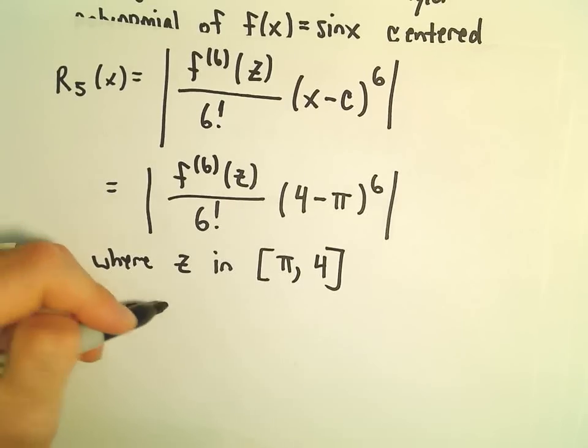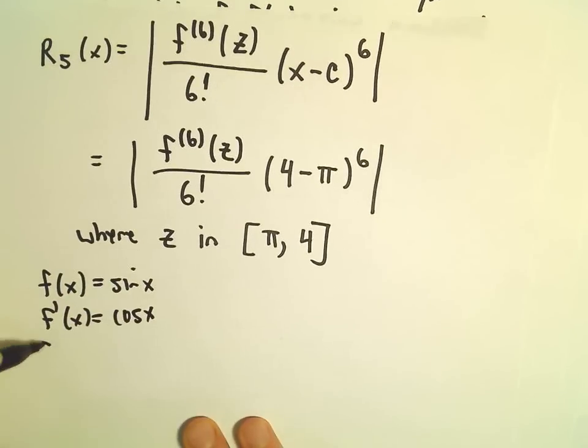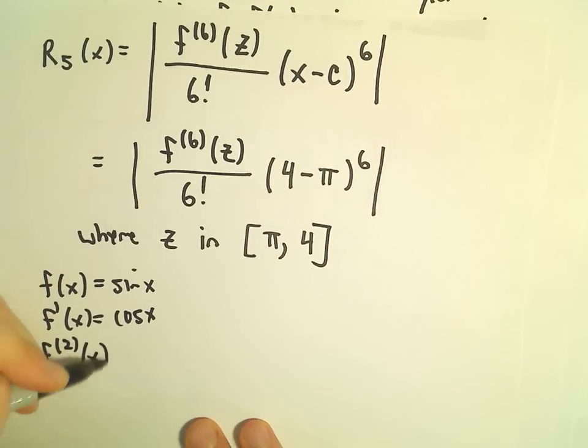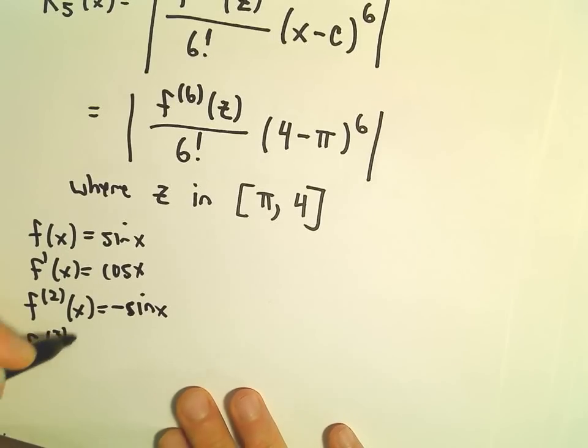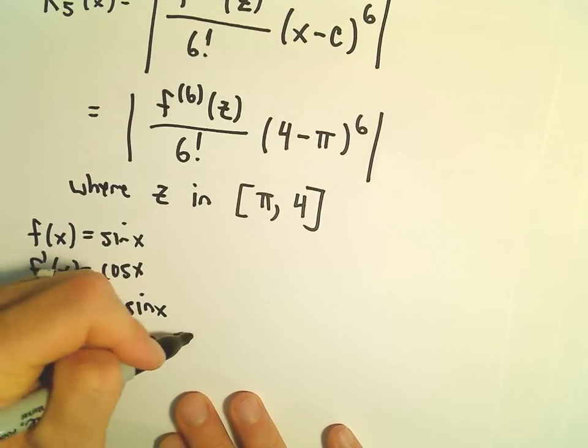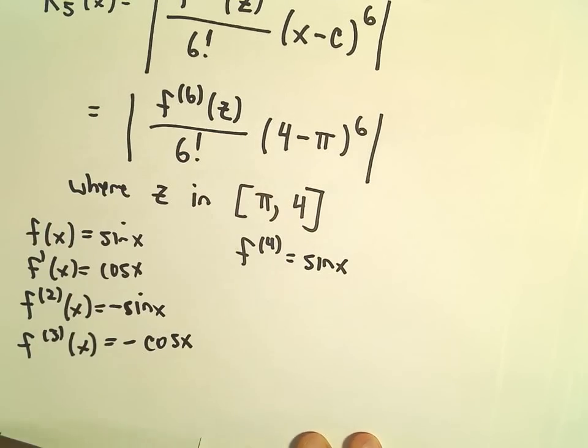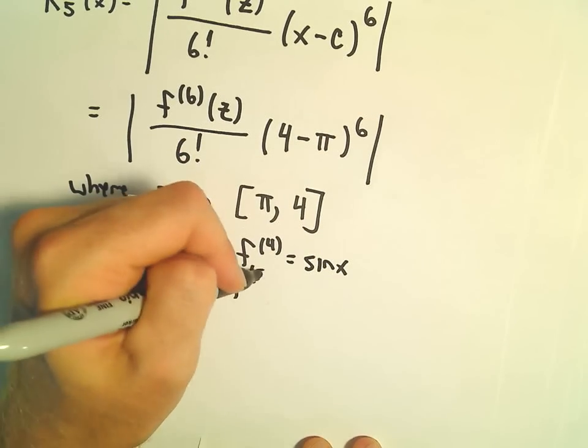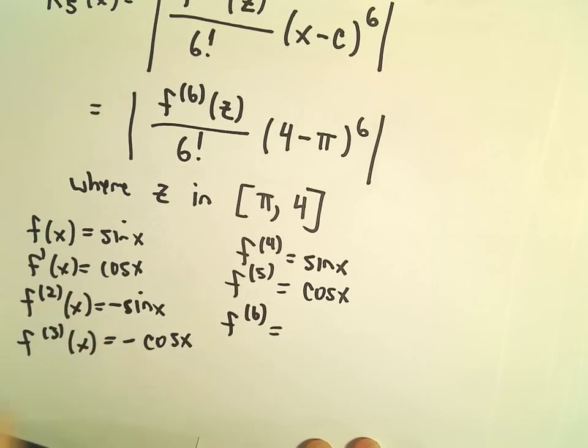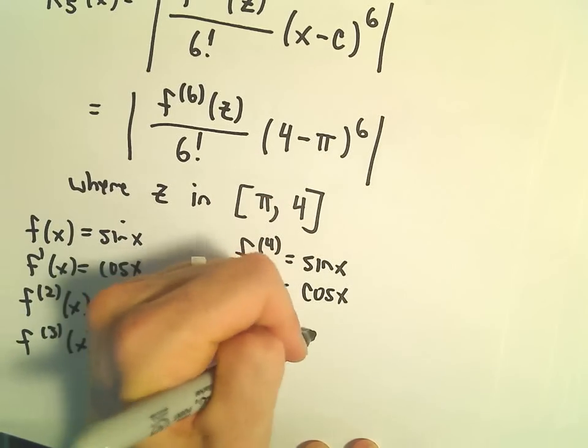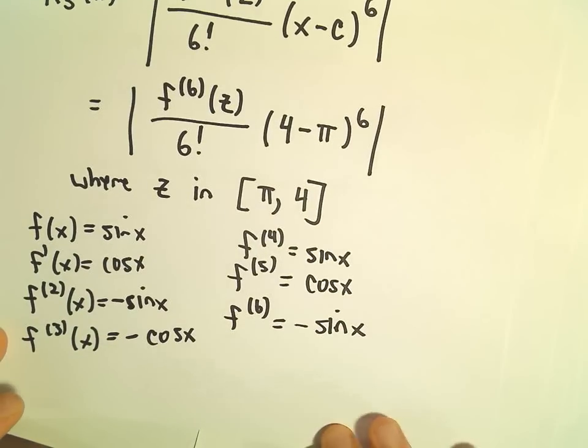So f of x is sine x. The first derivative is cosine x. The second derivative is negative sine x. The third derivative is negative cosine x. And then the fourth derivative, we're back at positive sine x. The fifth derivative is cosine x, and the sixth derivative is negative sine x. I think we did everything correctly there.